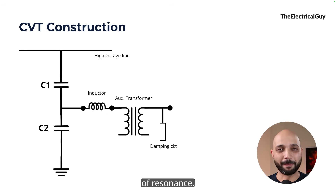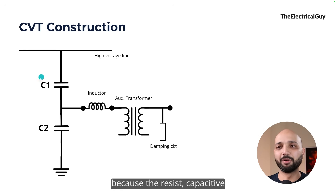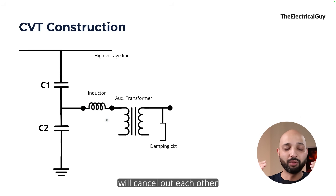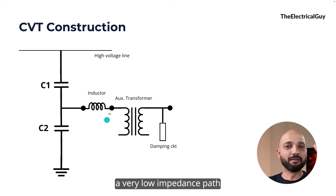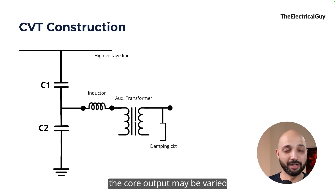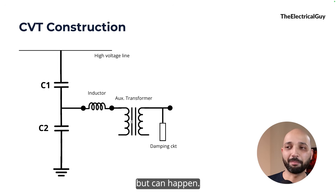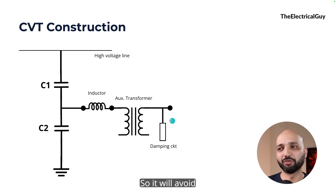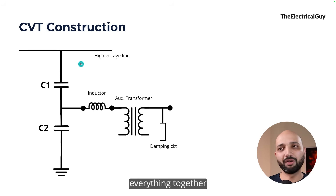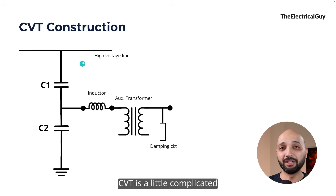Another issue is that since we have both a capacitor and an inductor in the circuit, there can be a situation of resonance — where the capacitive reactance and inductive reactance cancel each other out at a certain frequency, creating a very low impedance path. This can saturate the core and vary the output. It's a rare scenario, but to avoid it, a damping circuit is also included. Putting everything together gives us the capacitive voltage transformer, making its construction more complex than the IVT.